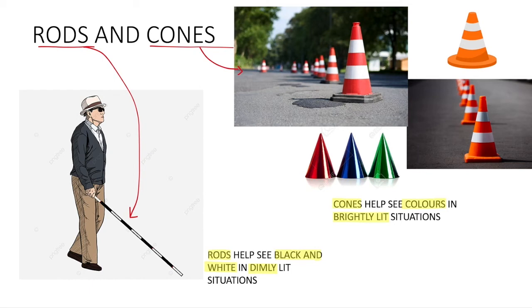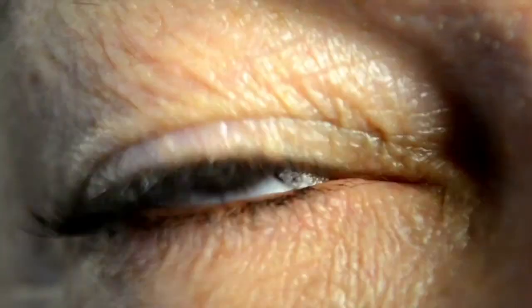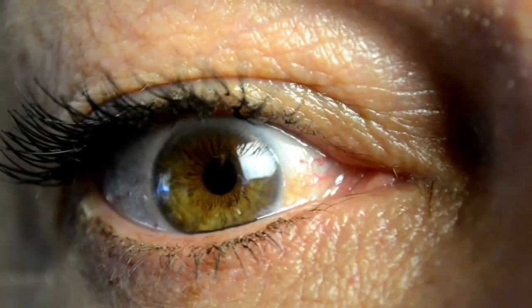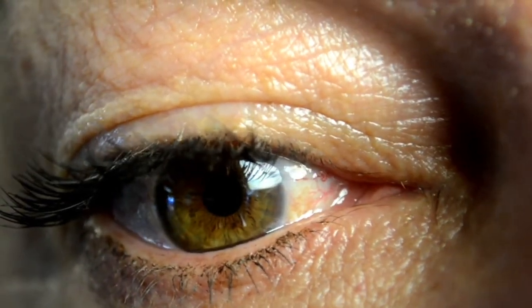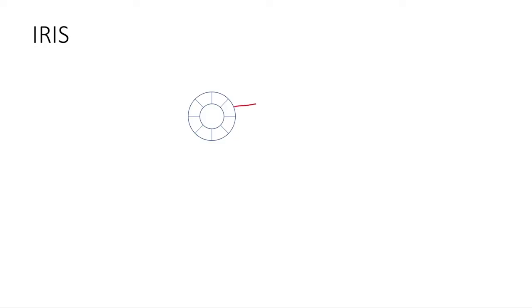We talk about how the iris controls the size of the pupil. Remember, the iris is lined with muscles, circular muscles and radial muscles. So these are very similar to the digestion chapter where you talk about peristalsis. Recall that chapter link in the top right corner. They work antagonistically, means one will contract, the other will relax, vice versa.